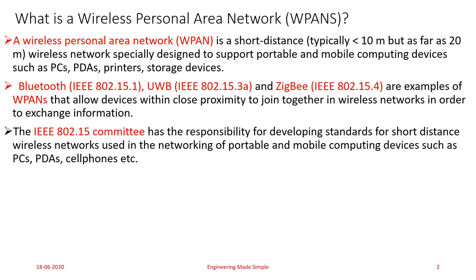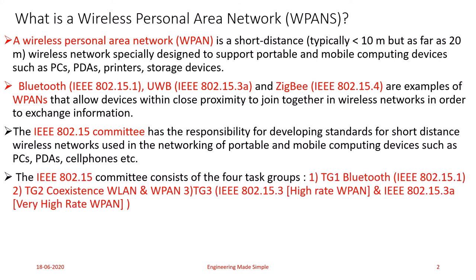The IEEE 802.15 committee has the responsibility for developing standards for short-distance wireless networks used in networking of portable and mobile computing devices such as PCs, PDAs, and cell phones. The committee consists of four task groups: Task Group 1 (IEEE 802.15.1), Task Group 2 (coexistence of WLAN and WPAN), Task Group 3 (IEEE 802.15.3, high-rate WPAN), and IEEE 802.15.3A (very high-rate WPAN).